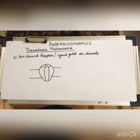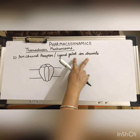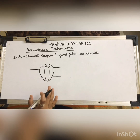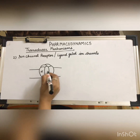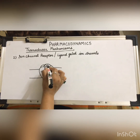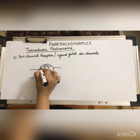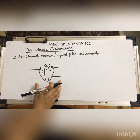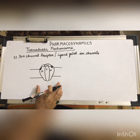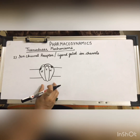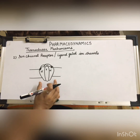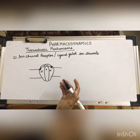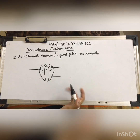The second type of transducer mechanism is ion channel receptors, also known as ligand-gated ion channels. Structurally, they are pentameric — having five subunits: two alpha subunits, and beta, gamma, and delta subunits. The two alpha subunits carry the agonist binding site on the extracellular side. These are cell surface receptors that enclose an ion-selective channel, meaning they are specific for a particular ion.